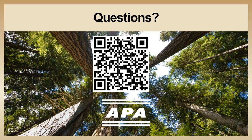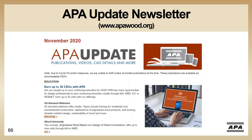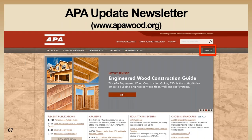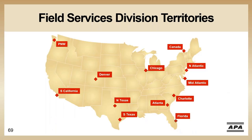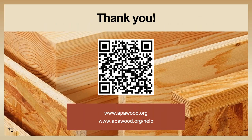Thank you again, Warren. Before we conclude, make sure you're signed up to receive our APA Update newsletter so that you will be notified of future webinars and updates to APA publications and standards. From our homepage, click on 'Sign In' in the upper right-hand corner, select 'Register' in the drop-down menu, and let us know what you'd like to receive from APA. APA has field staff located throughout the country available to assist design professionals, builders, and code officials — their contact information can be found at apawood.org. Don't forget to download your AIA or ICC certificate of completion. Thank you for attending. Have a great day.